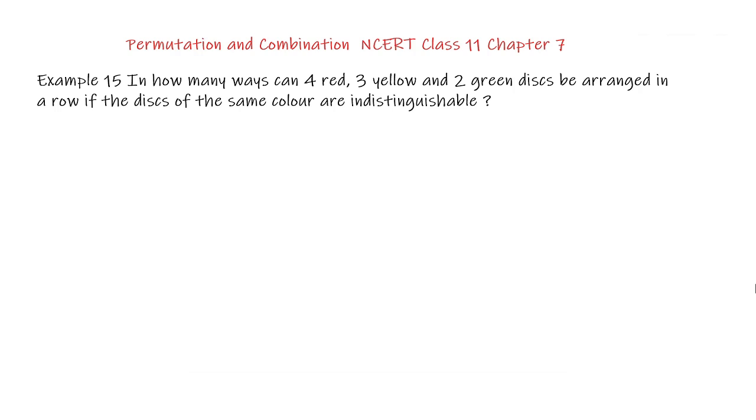In how many ways can 4 red, 3 yellow and 2 green disks be arranged in a row if the disks of the same color are indistinguishable?